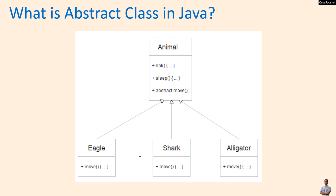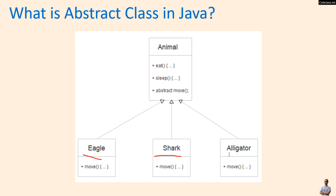Let me show you some code examples to understand the concept of object class in Java. In this class diagram, the Animal is an object class — it has two concrete methods, eat and sleep, and one object method, move. There are three subclasses of Animal: Eagle, Shark, and Alligator. These classes are subtypes of Animal, and because the Animal class defines the object method move, the subclasses must provide implementation in each subclass.